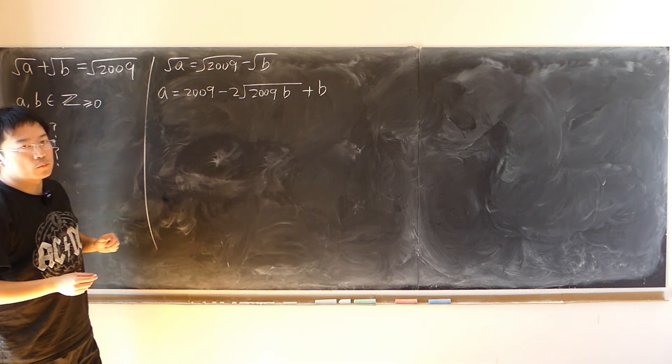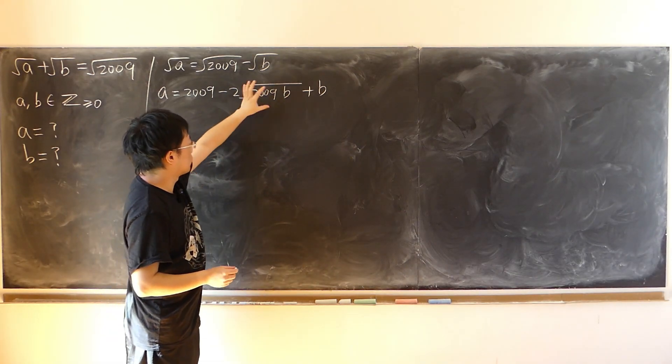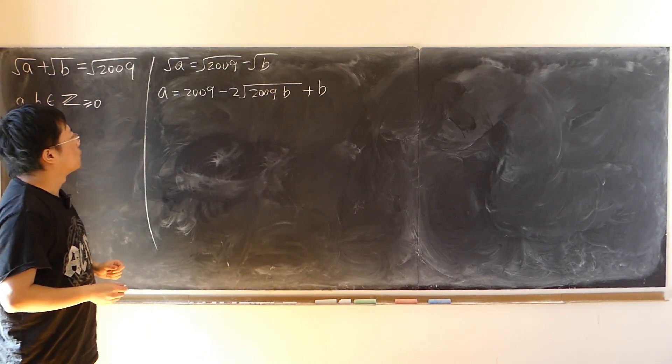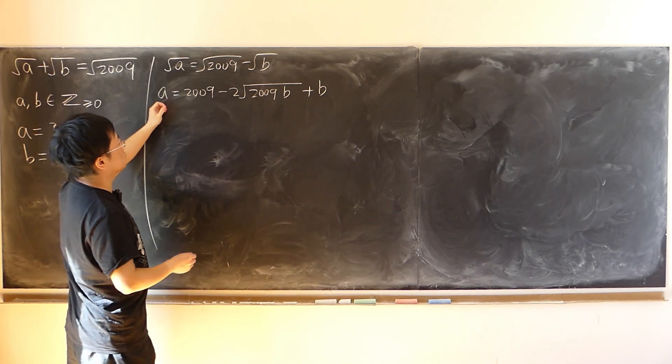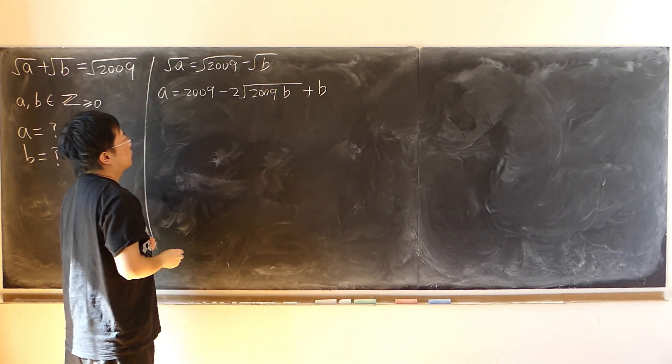Now this time we only have one term that contains square root. And notice a is an integer, b is also an integer.